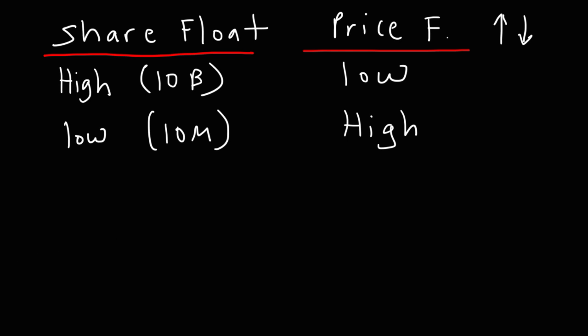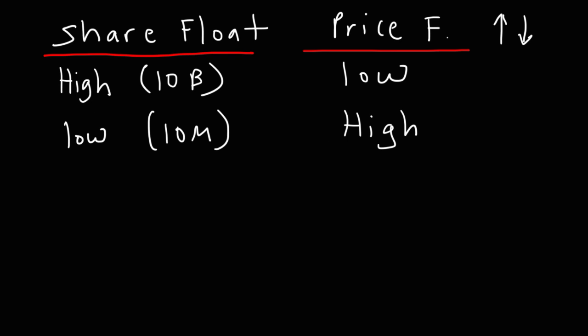If the average daily trading volume is very high relative to the share float, price fluctuation will be high. But if the average daily volume is low compared to the share float, price fluctuations will be low. You need to compare the share float with the average trading volume. If the average trading volume is high and the share float is low, the price can move quickly. But if the average daily trading volume is low and the share float is relatively high, price fluctuations will typically be very low.